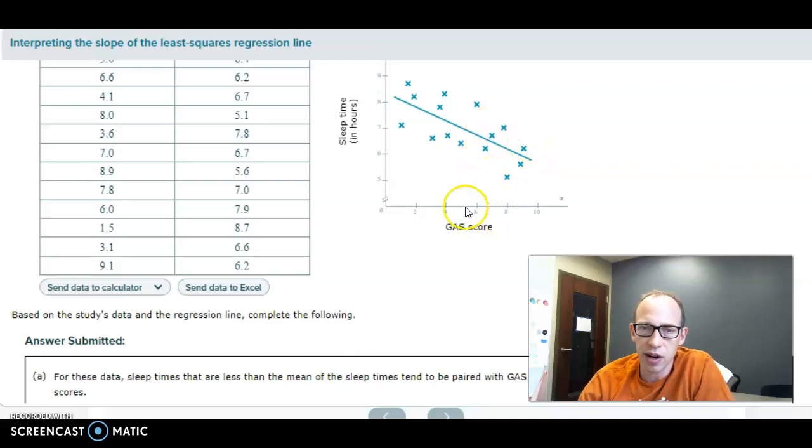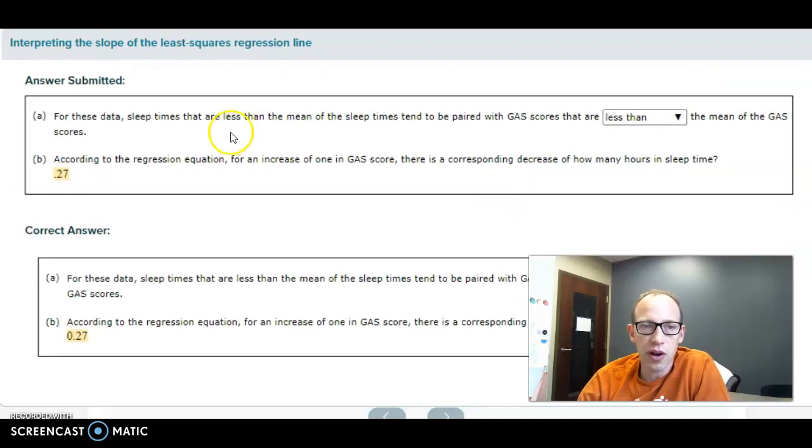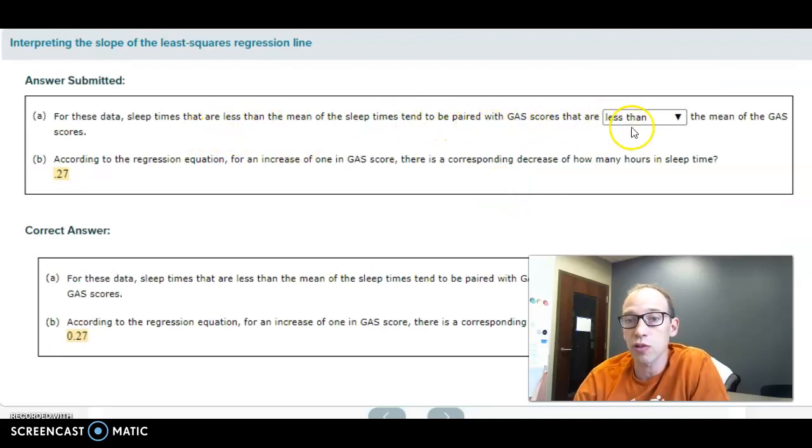Those are the higher anxieties. Our anxiety mean is somewhere around five or so. So these people down here have higher than average anxiety and lower than average sleep. Sleep times that are less than the mean tend to be paired with GAS scores that are greater than the mean.